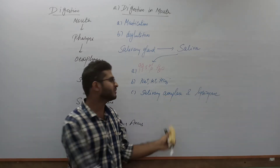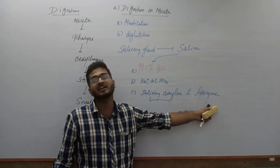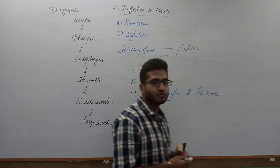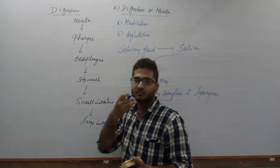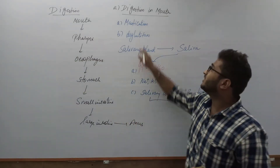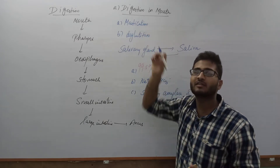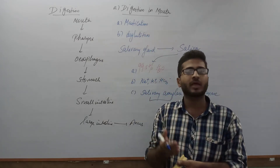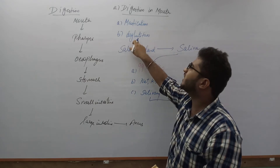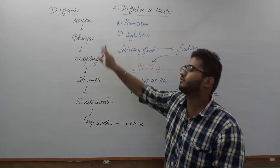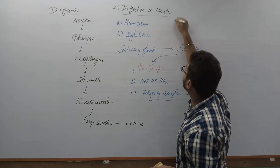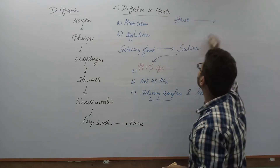These two enzymes play a major role. The main digesting enzyme is salivary amylase. Lysozyme has an antibacterial role — it is bactericidal in nature. As soon as we take food into the buccal cavity, with the help of teeth we masticate and grind the food into small particles, increasing surface area for digestion. Salivary amylase's main role is to convert starch present in the food into maltose.